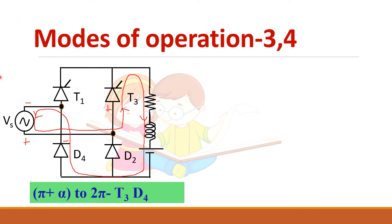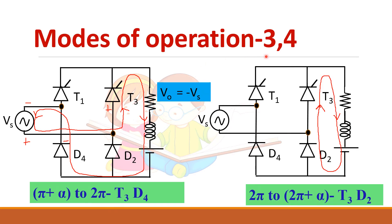From pi+alpha to 2pi, D4 is already conducting and the gate pulse is given to T3 at pi+alpha, so T3 and D4 conduct together and output voltage equals minus Vs. In the next interval from 2pi to 2pi+alpha, it is again the positive half cycle, D2 comes into conduction, and current freewheels through T3 and D2, making output voltage zero again.